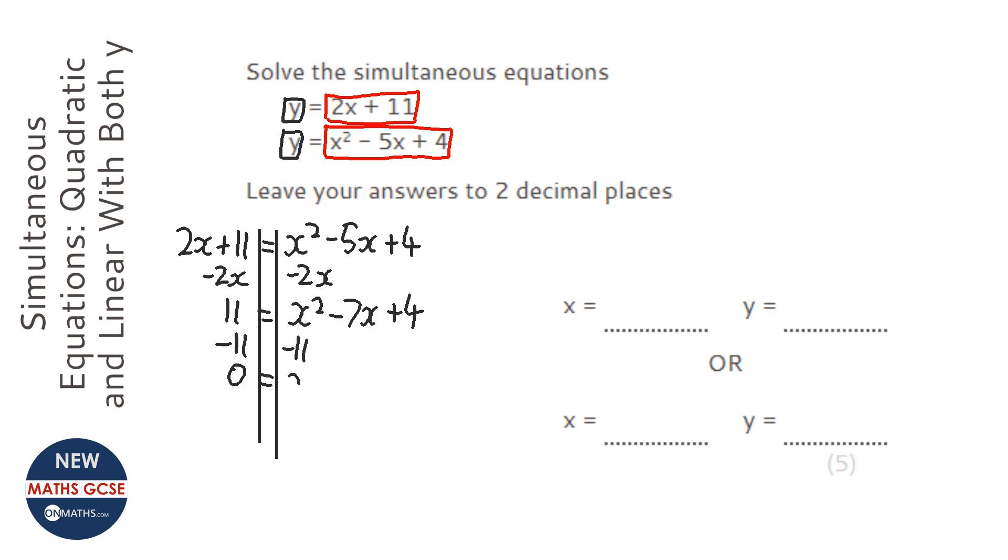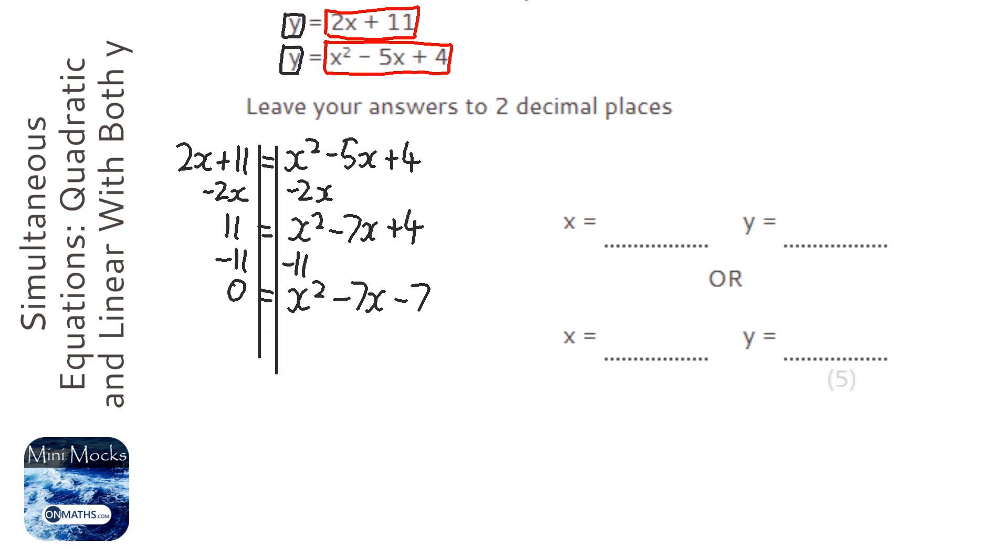So we've got equal to 0, which we need quadratics to be equal to. So it's 4 take away 11, which is going to be minus 7. OK, so at this point we're looking at either factorising, which I doubt is going to work, or using the quadratic formula. I think we're going to need the quadratic formula for this.